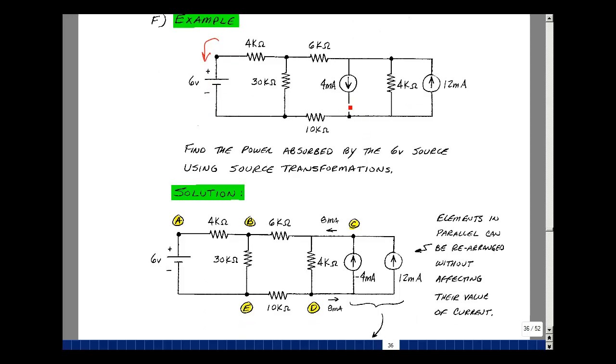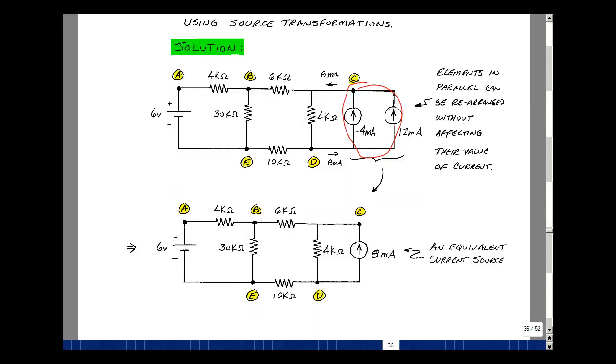Things in parallel can be put in any order. So I put these two current sources together. We flip the direction of this one to be pointing up. I would do that by changing the sign on it. What's entering this node is 12 milliamps plus a minus 4 milliamps. 8 milliamps is leaving, and of course 8 milliamps is entering. What's coming in here is minus 4 plus 12. You could replace all of this by one current source that creates the same effect. And that's what I've shown here.